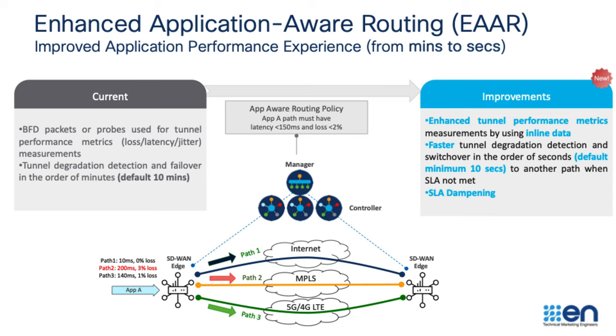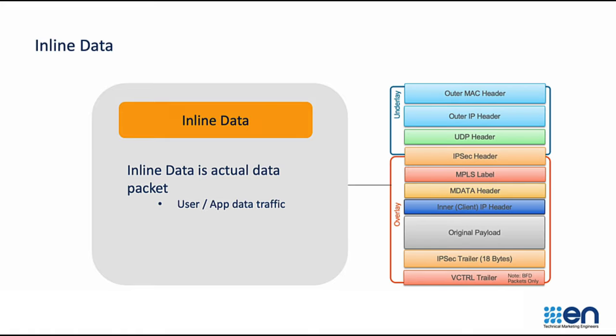Let's understand inline data. Inline data is nothing but the actual data packet, which is the user traffic or the application traffic, and it is also part of the SD-WAN header.